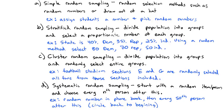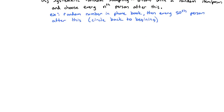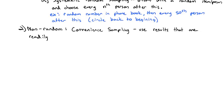There is a non-random method that is used quite a bit. And so we should at least acknowledge the non-random method called convenience sampling, which basically says use the results that are readily available.